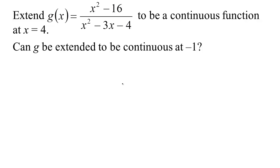We want this to be a continuous function at four. We can see four is a problem because downstairs we'd have sixteen minus twelve minus four is zero, so everywhere the denominator is not zero this would be a continuous function. It's also got a zero denominator at negative one: one plus three minus four is zero. So we have two discontinuities, one at x equals four and one at x equals negative one.